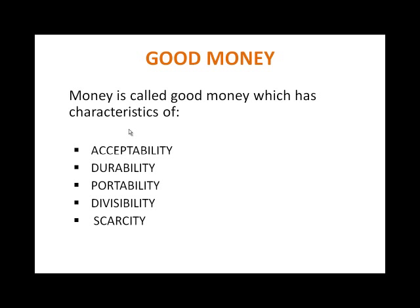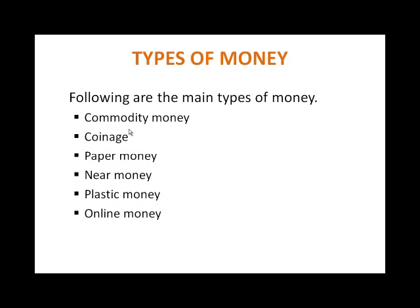For example, if we have a 100 dirham note, we can divide it into 10 equal parts of 10 dirham each. Scarcity means money is not easily available — you have to sacrifice something, put in effort to earn money, or sell something to get money. So money is scarce. These are the qualities of good money.